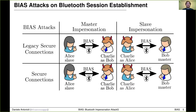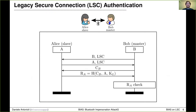Let's start with LSC authentication. This procedure provides unilateral authentication using a challenge-response protocol and works as follows. With the first two messages, Alice and Bob exchange their Bluetooth addresses and they negotiate LSC support. Then Bob, the master, sends a challenge to Alice, the slave. Alice computes a response based on the challenge, her Bluetooth address, and the shared pairing key, and sends the response to Bob. Bob computes the response locally and checks it against the response received from Alice. If the responses are not equal, Bob aborts secure session establishment. Otherwise, it authenticates that Alice owns the correct pairing key.